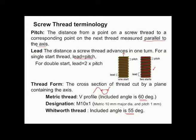How are screw threads designated? Metric threads are designated as follows — for example, M10×1, where M indicates metric type, 10 indicates 10 mm major diameter, and 1 indicates a pitch of 1 millimeter.